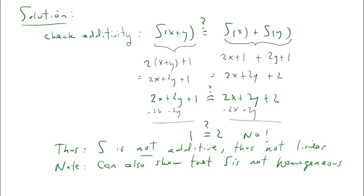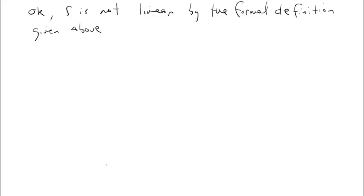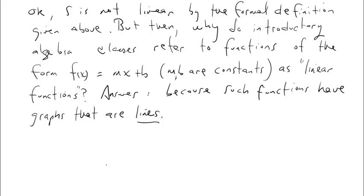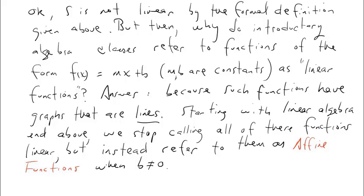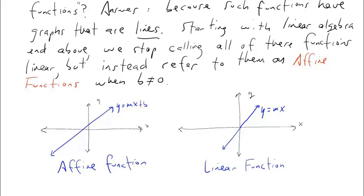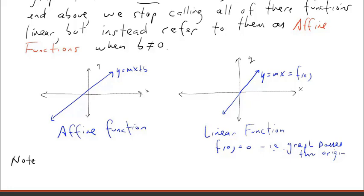We could also have shown S is not homogeneous, and therefore not linear. So S is not linear by the formal definition. But why do introductory algebra courses call functions like mx plus b 'linear'? The answer is that their graphs are lines — that's where the original terminology came from. Starting with linear algebra, we stop calling these functions linear and instead refer to them as affine functions when b is not equal to 0. A linear function has the property that f of 0 equals 0 — its graph passes through the origin. For an affine function, the graph does not pass through the origin.